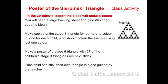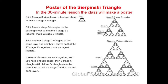Each child can stick their own triangle in place, guided by the teacher. Once you've coloured in your stage 3 triangles, stick three of them on the bottom left hand corner of your pencil line to make a stage 4 triangle. Use the ruler to ensure the triangles are level with each other. Stick six more stage 3 triangles on the sheet so that the nine stage 3 triangles together make a stage 5 triangle. Stick another nine stage 3 triangles at the same level and another nine above so that the 27 stage 3's together make a stage 6 triangle.